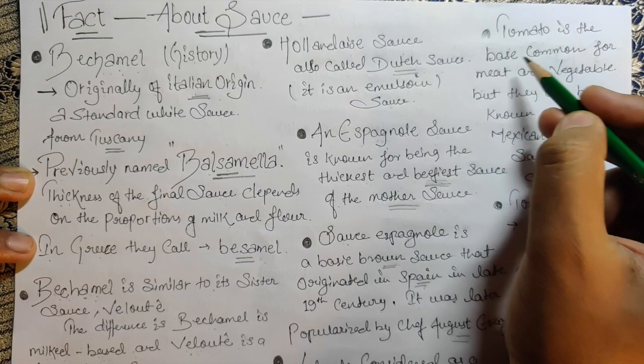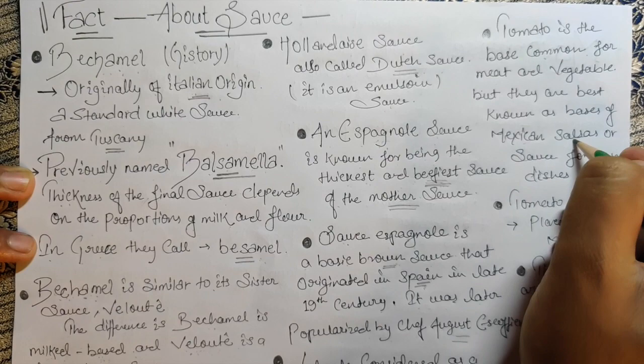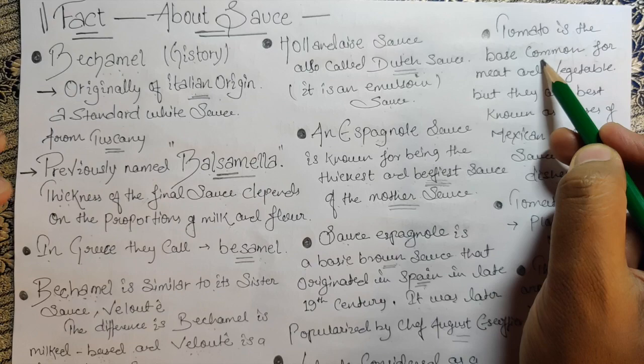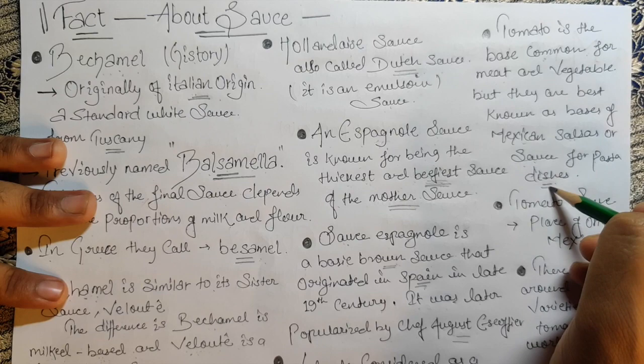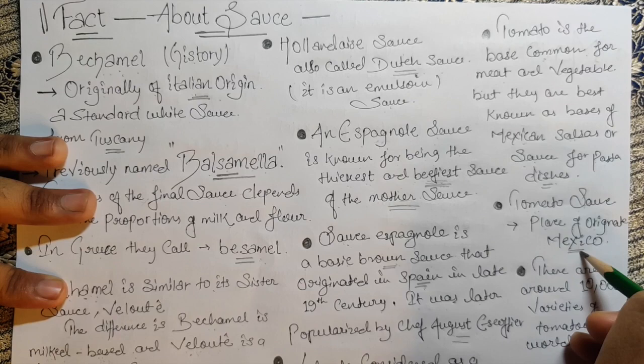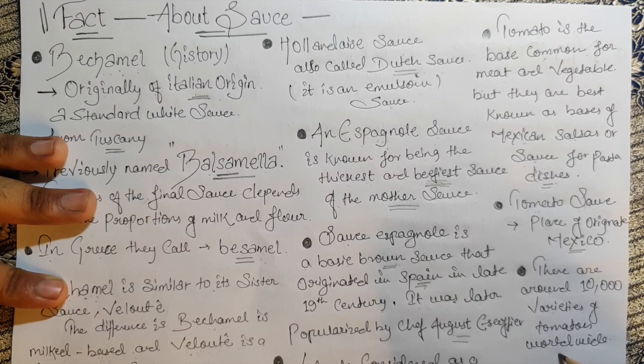Tomato sauce is a base common for all meat and vegetables, but it is best known as the base for Mexican salsa and pasta dishes. Tomato sauce originated in Mexico. Interestingly, there are around 10,000 varieties of tomatoes worldwide — every country has different types of tomatoes.